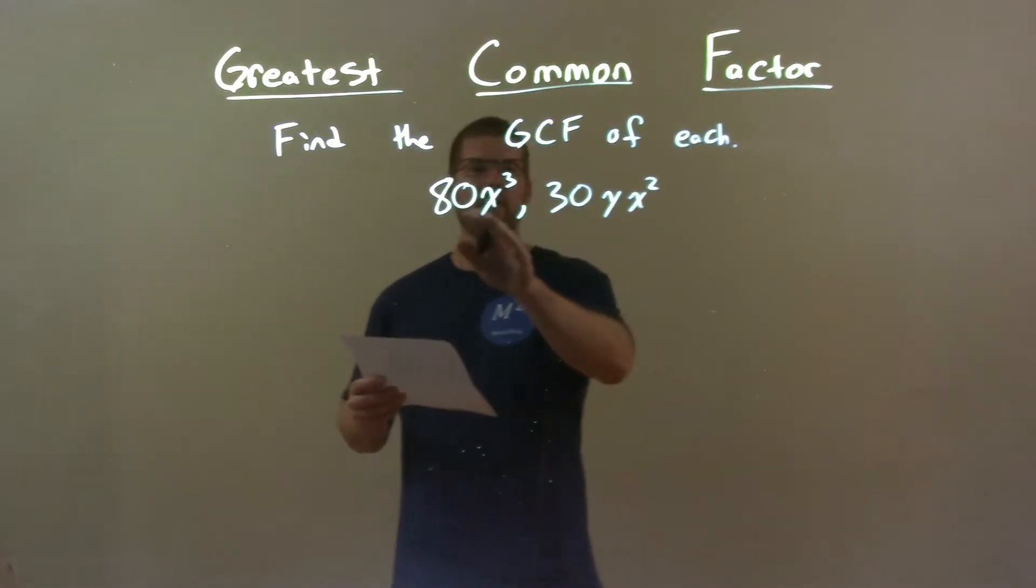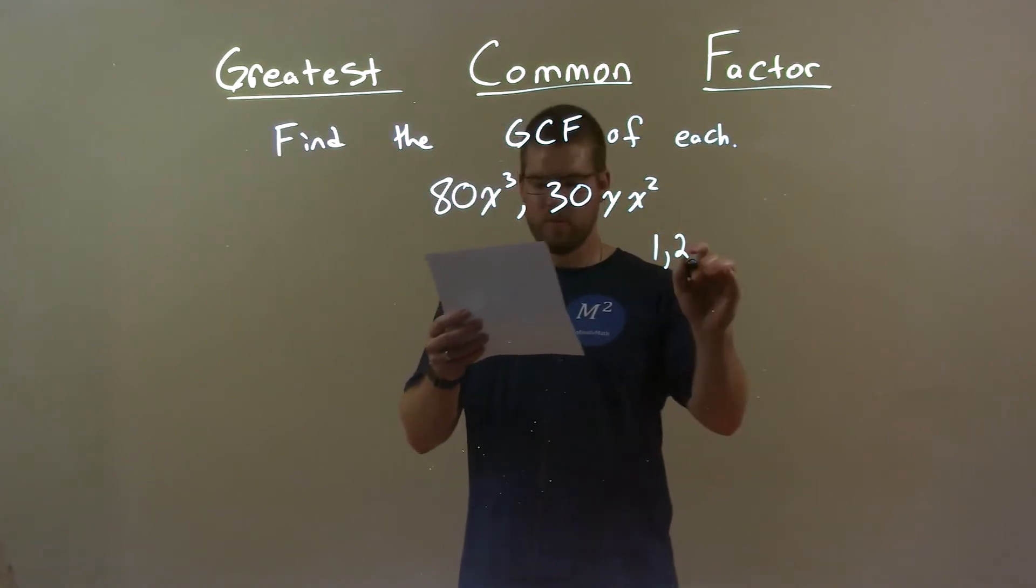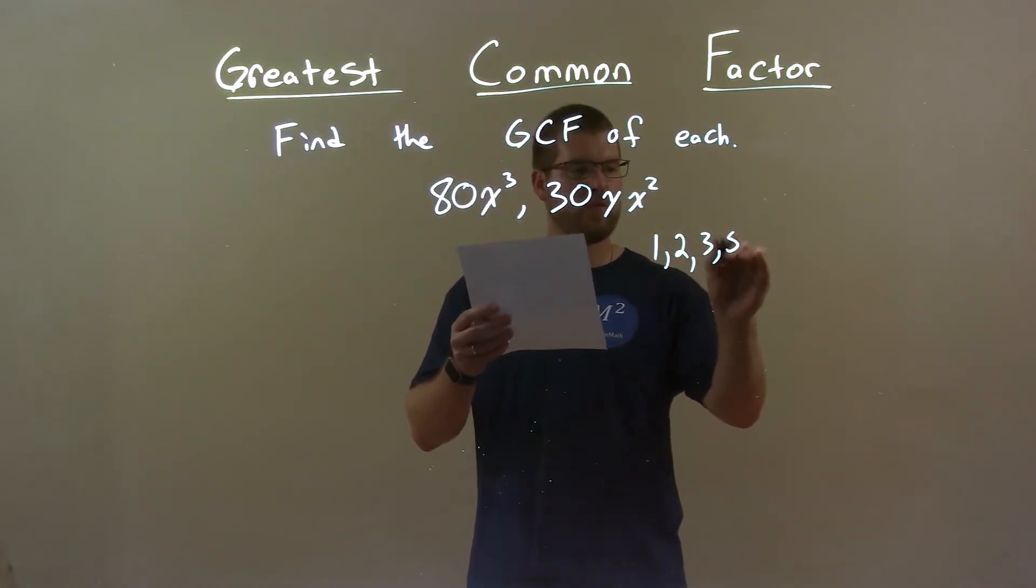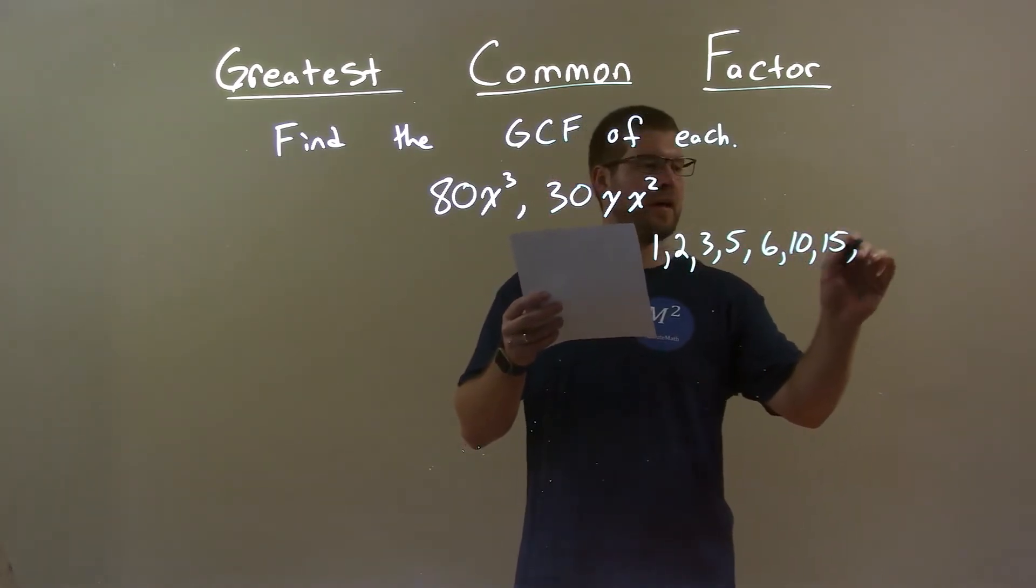Well, I take the smaller of these numbers and find all the factors of them. That is 1, there's 30, excuse me, it was 1, 2, 3, 5, 6, 10, 15, and 30.